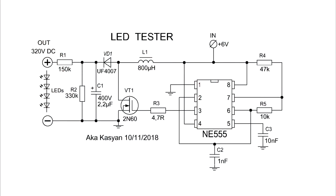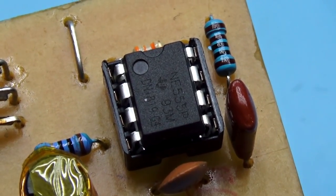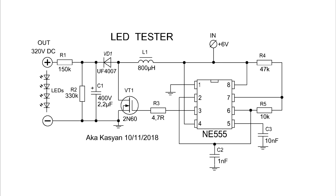How does it work? Based on the timer NE555, a generator of rectangular pulses is assembled. The frequency is about 20 kHz. The signal from the timer output goes to the gate of the high voltage field-effect transistor and opens it. Through the transistor, the choke connects to the power source. At this stage, energy is pumped into the choke.